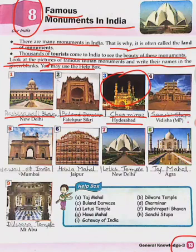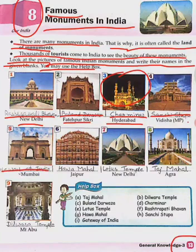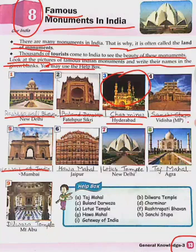Our fifth monument is Gateway of India. The spelling is G-A-T-E-W-A-Y, Gateway, O-F, I-N-D-I-A, India — Gateway of India. Gateway of India is located in Mumbai.